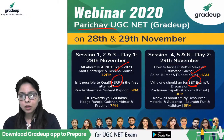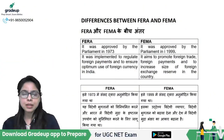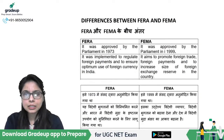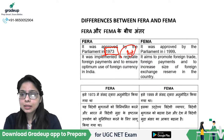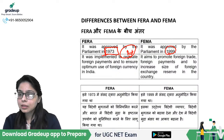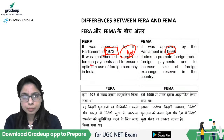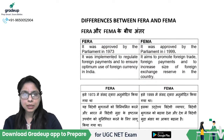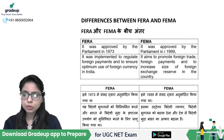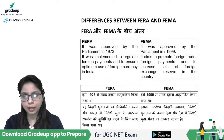Now let's look at the differences between FEMA and FERA. FERA was approved in Parliament in 1973, while FEMA was passed in Parliament in 1999. FERA was implemented to regulate foreign payments and to ensure optimum use of foreign currency in India.